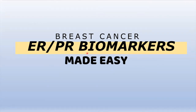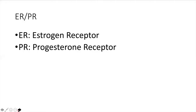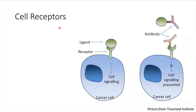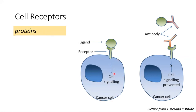Welcome to our short discussion on ER-PR biomarkers made easy. ER stands for estrogen receptor, while PR stands for progesterone receptor. To further understand, cell receptors are actually proteins, and they can be located on the surface of the cell or on the inside of the cell.